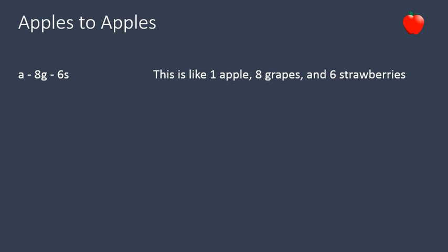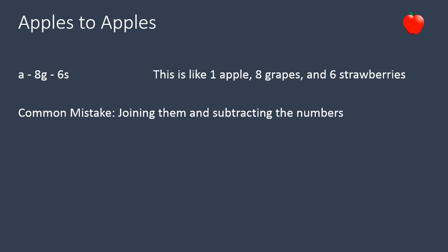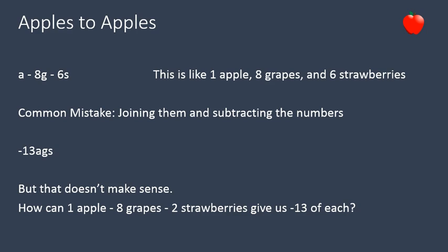If I had a minus 8g minus 6s, this is like 1 apple, 8 grapes, and 6 strawberries. The most common mistake, just like with adding, is that you join all the numbers together and then join all the letters together — that is a mistake. This does not equal negative 13 AGS, just like 1 apple, 8 grapes, and 6 strawberries would not give you negative 13 apple-grape-strawberry. You have to leave them separate. So same thing with polynomial subtracting.